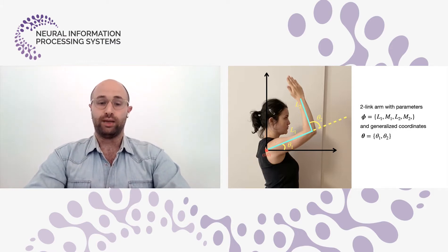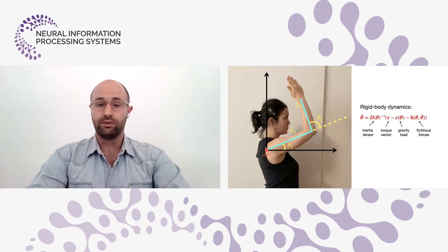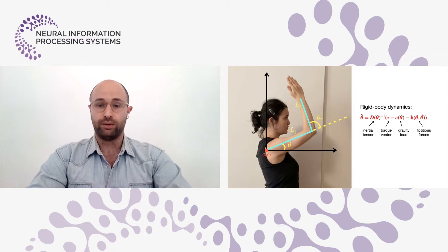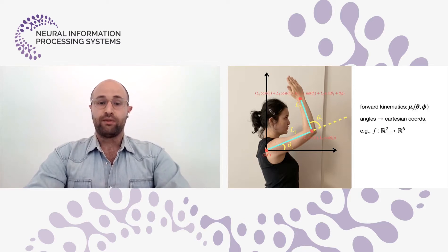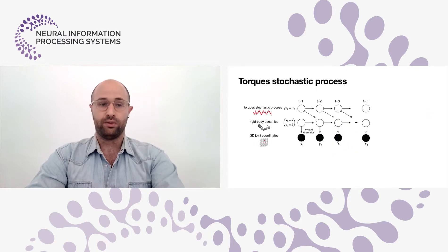We move to work with the angles — the generalized coordinates — and describe their dynamics in time. This dynamics is described by a second-order equation over the angles as a function of the external torques, and it includes an inertia tensor, gravity load, and fictitious forces. This equation holds for arbitrary rigid bodies, but different rigid bodies differ in the entries and dimensions of these expressions. We have a mapping from angles to joint coordinates called the forward kinematics map, denoted mu sub y, which takes in angles and outputs those red sinusoidal functions of them. It's nonlinear. The first set of arrows in our model describes the stochastic process over the torques: tau dot equals f of tau.